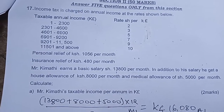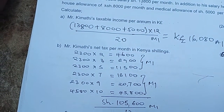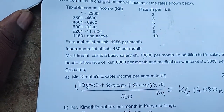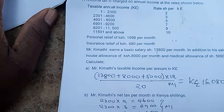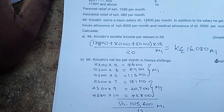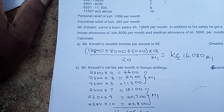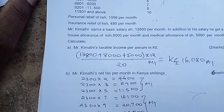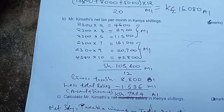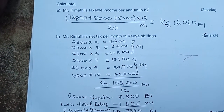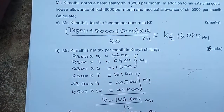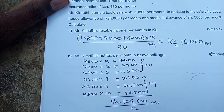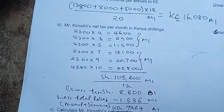In the third bracket, the amount is 2,300 and the rate charged is 5 shillings per pound. Since this salary is above 11,500 Kenya pounds, for the last bracket we take the rate of 10 and multiply by 4,580, which gives 45,800.